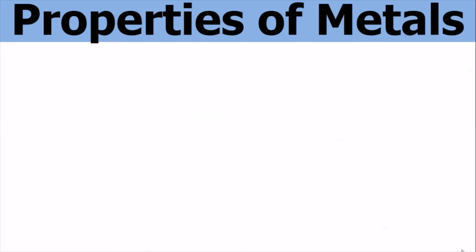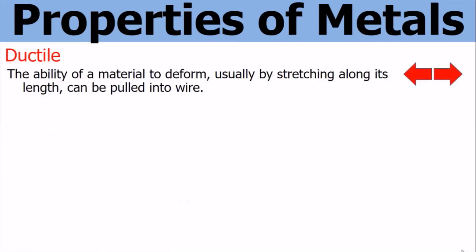Properties of metals. Ductile — this is a property of metal. This is the ability for a material to deform, usually by stretching along its length. So for example, copper is ductile; it can be pulled into wire.